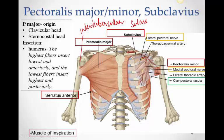Once you cut the pectoralis major, underneath you see a tiny muscle called pectoralis minor, which arises from the ribs and inserts on a process of the scapula called the coracoid process. When it acts, it pulls the coracoid process down, depressing the scapula. Then there is a very tiny muscle going from the first rib to the clavicle called subclavius — it's so small it really does not have any particular action.